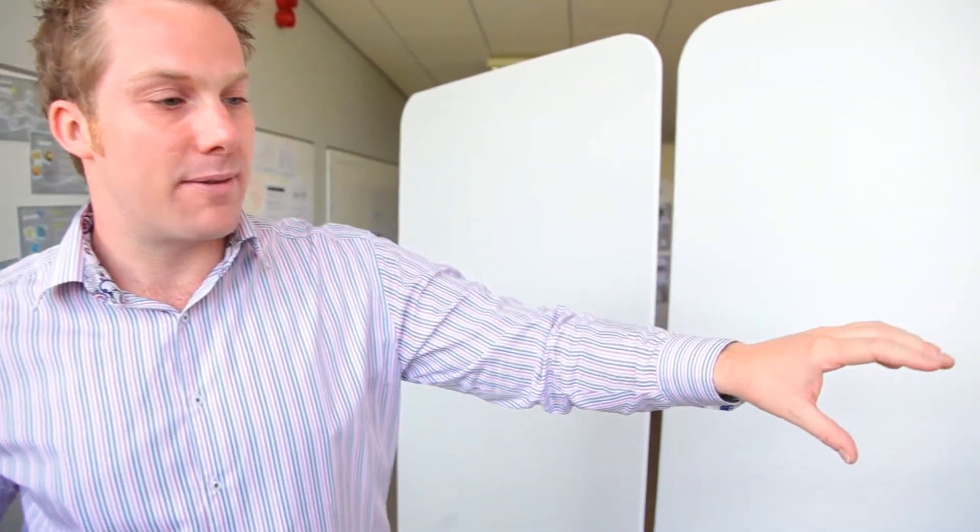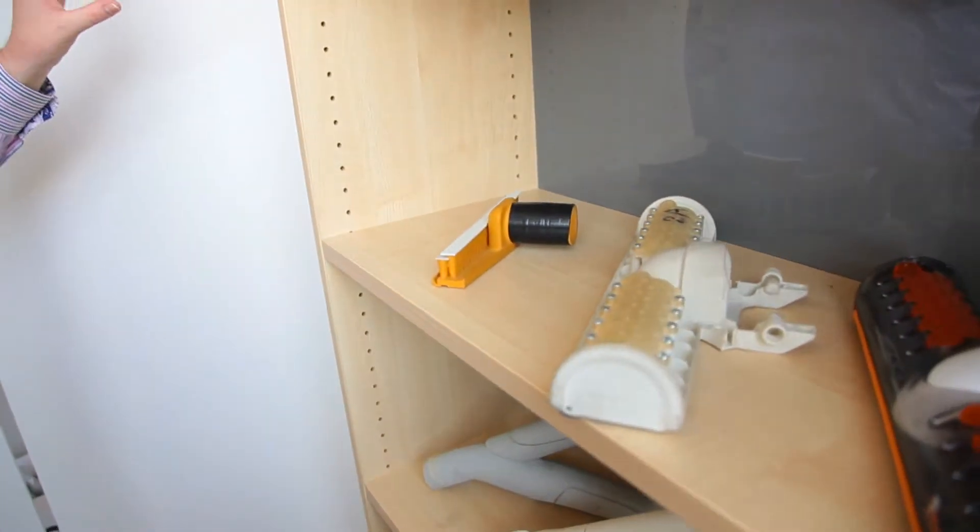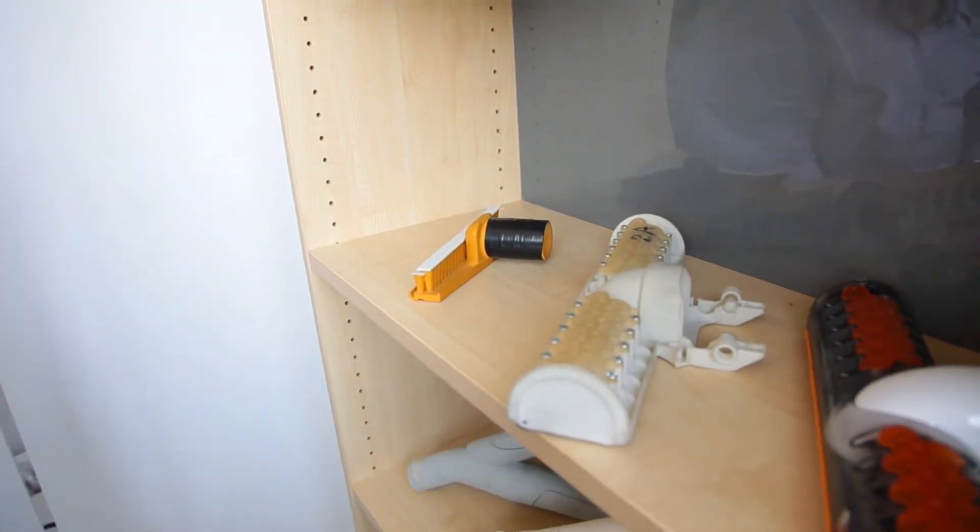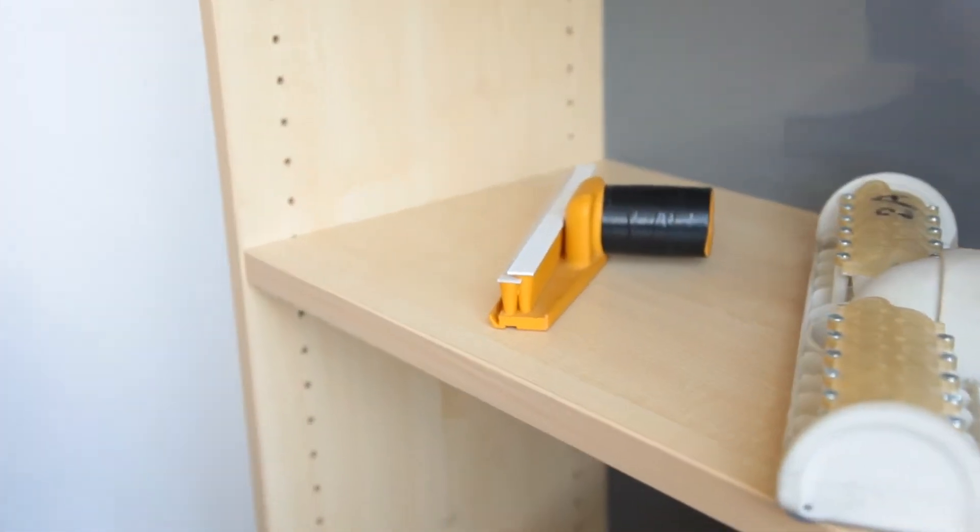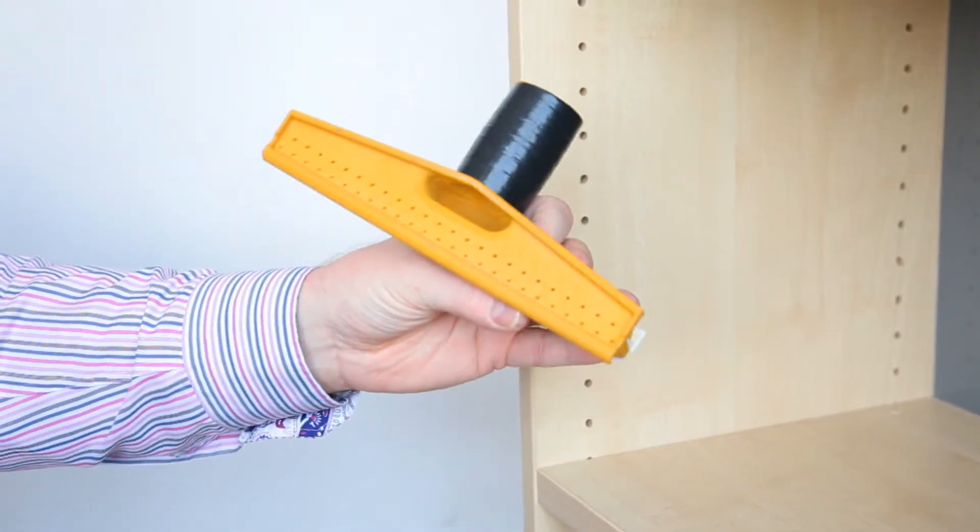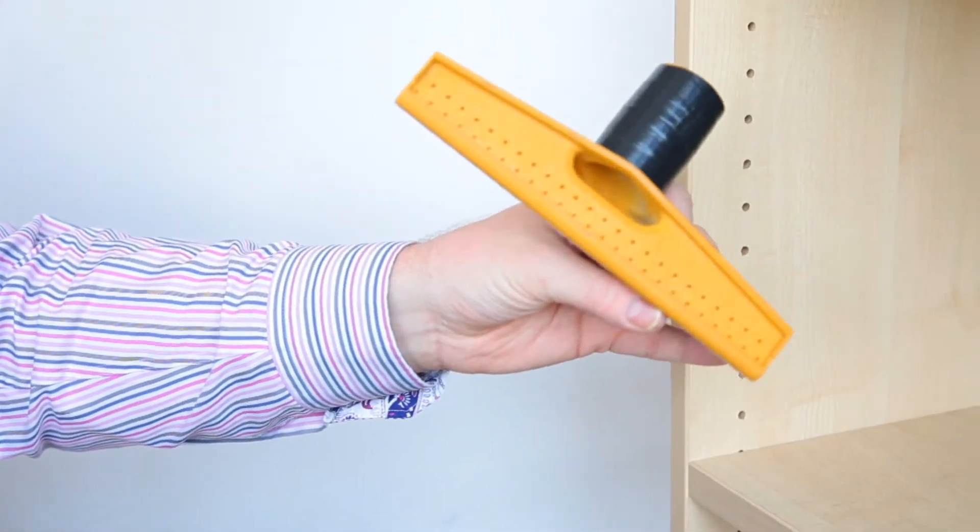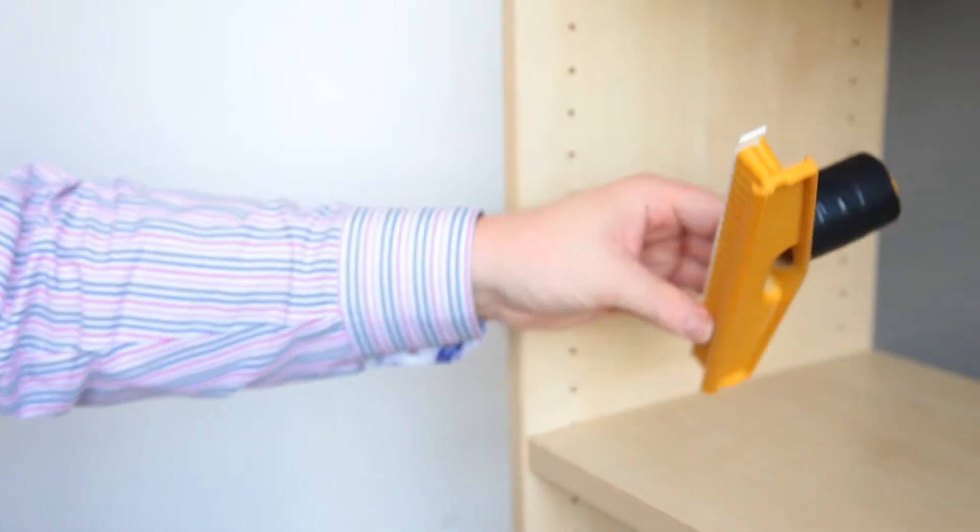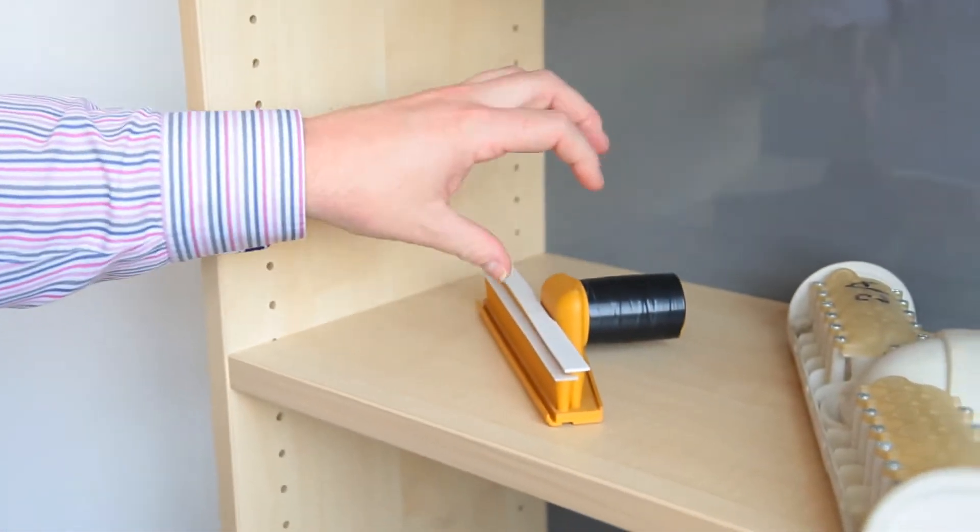So here we just have a very quick demonstration of how a concept is created and then goes through to production. So right back a few years ago we had an idea and the easiest and quickest way to do that is prototype that on our FDM machine which is in the office.